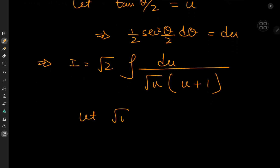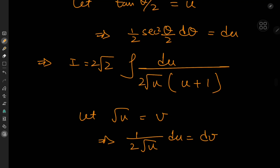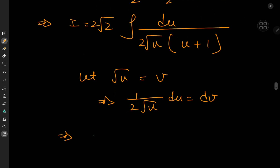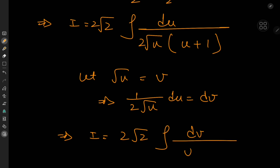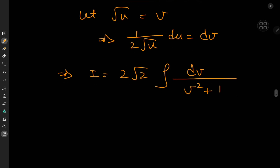Letting root u equal v implies that 1 over 2 root u du equals dv, so we need a couple of extra 2s. This gives I equals 2 root 2 times the integral of dv divided by v squared plus 1, which we of course recognize as the inverse tangent. So we have 2 root 2 times arctan(v) plus a constant of integration C.